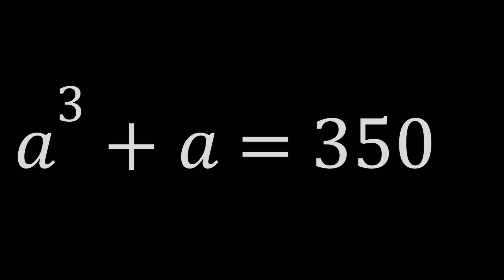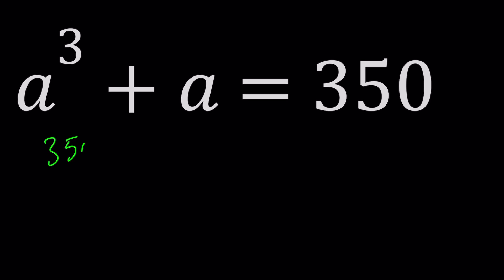You can definitely solve this problem using the cubic formula, but I have a better idea. Let's start by factoring 350. We can write it as 7 times 50, and then 50 is 49 plus 1. What is significant about that is 49 is 7², and 7 is 7¹.